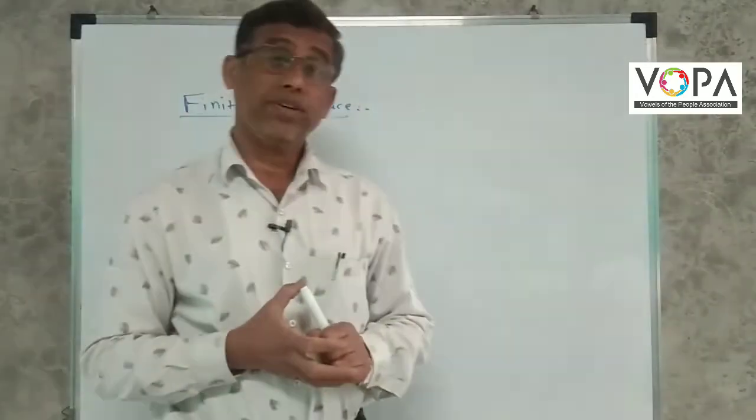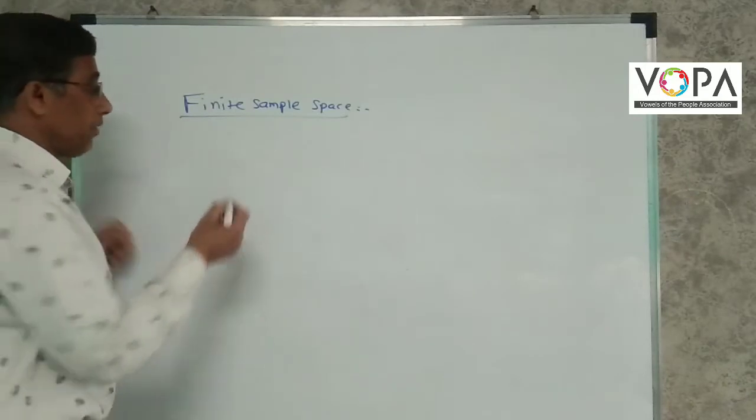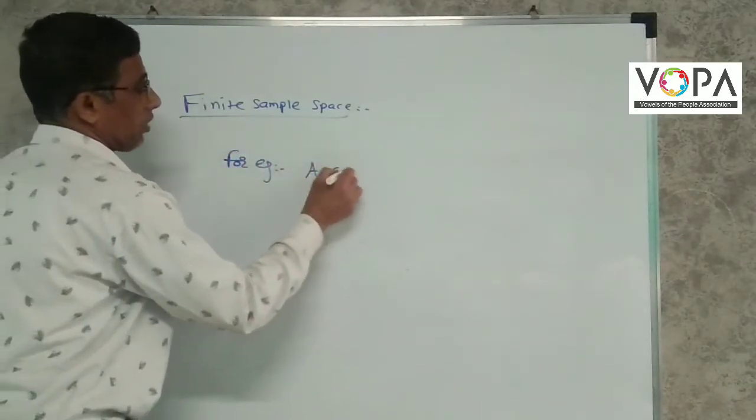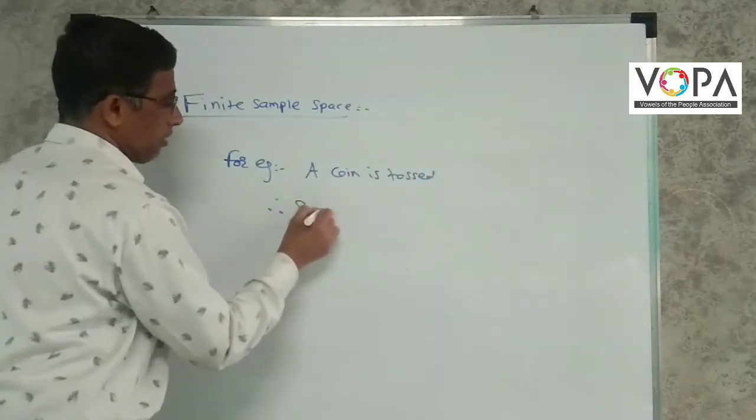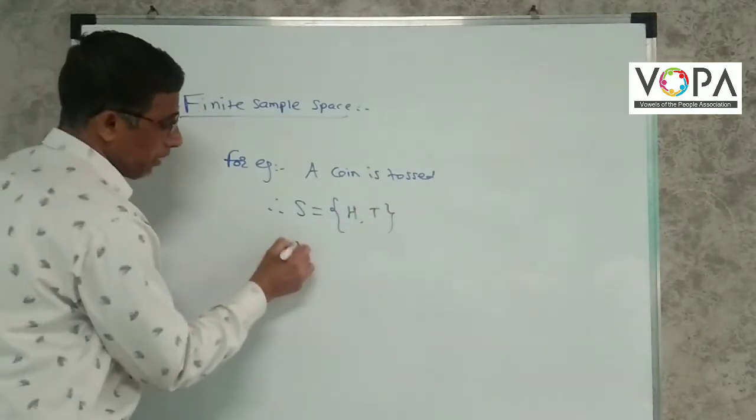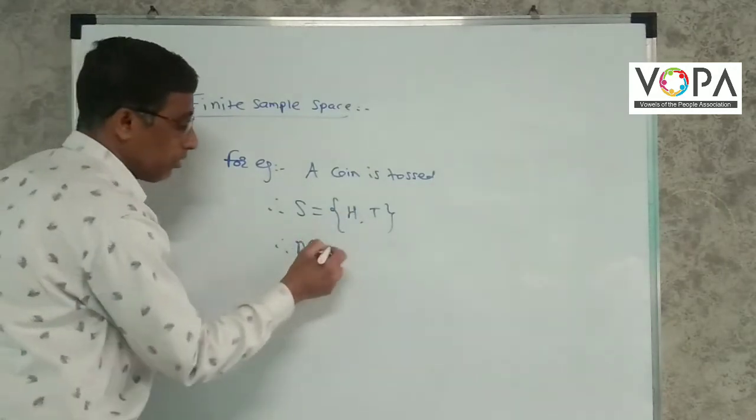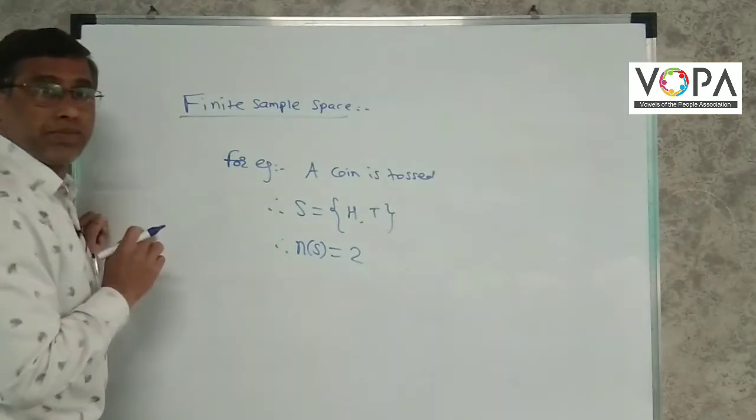If N of S is finite, then the sample space is said to be finite sample space. For example, a coin is tossed. Then S equals H, T. Therefore, the number of sample points in sample space S is 2, so N of S is 2. This is a finite sample space.